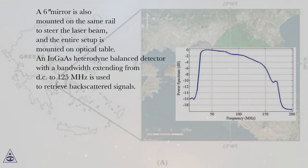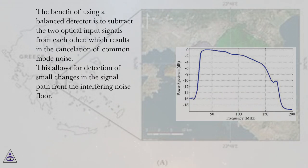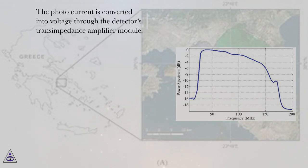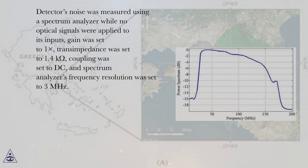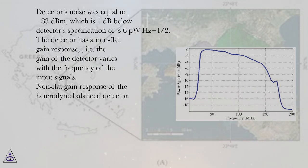An InGaAs heterodyne balance detector with a bandwidth extending from DC to 125 MHz is used to retrieve backscattered signals. The benefit of using a balanced detector is to subtract the two optical input signals from each other, which results in the cancellation of common mode noise, allowing detection of small changes in the signal path from the interfering noise floor. The photocurrent is converted into voltage through the detector's transimpedance amplifier module. Detector noise was measured using a spectrum analyzer with no optical signals applied: gain set to 1×, transimpedance set to 1.4 kΩ, coupling set to DC, and spectrum analyzer frequency resolution set to 3 MHz. Detector noise was equal to −83 dBm, which is 1 dB below the detector's specification of 3.6 pW Hz⁻¹/².